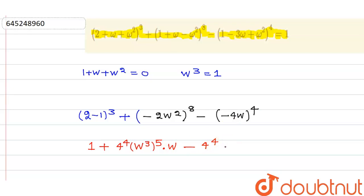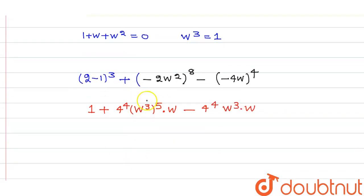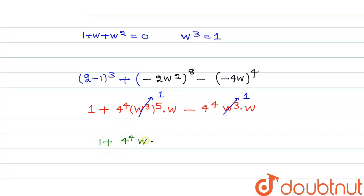For the third term, ω⁴ = ω³ × ω = 1 × ω = ω. So that term becomes 4⁴ × ω. Now we have: 1 + 4⁴ω - 4⁴ω. The two 4⁴ω terms cancel out, giving us the value equal to 1.